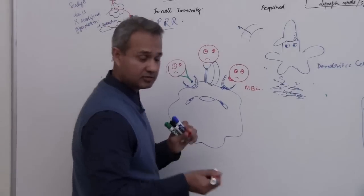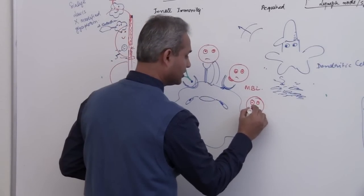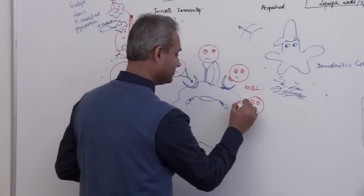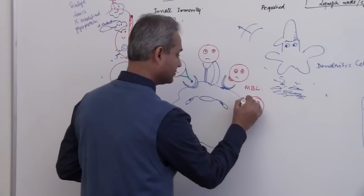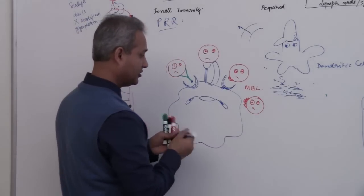So now some pathogens will also have their surfaces coated by, coated by what? The complements, right, like C3B and neutrophil has receptor for that too.